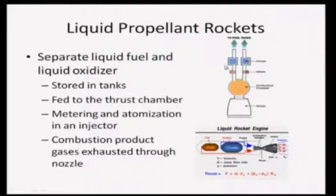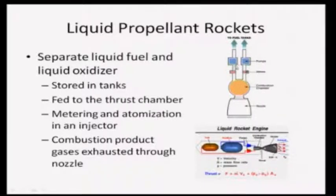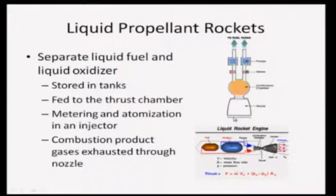As the name suggests, the liquid propellant rocket essentially uses liquid as propellants. Here we have a simple schematic where separate liquid fuel and oxidizers are stored in fuel tanks. Both fuel and oxidizer are fed into the thrust chamber through pumps. There are valves in between to control flow rates, and metering and atomization is done in an injector. Then combustion takes place in the combustion chamber and the gases are exhausted through the nozzle.